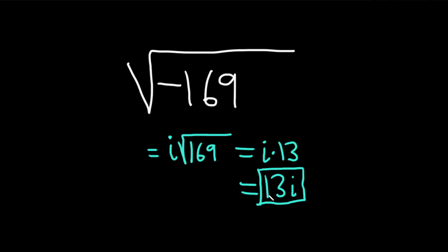But there is a faster way to do this. Eventually, you want to just look at this and say, hey, there is a negative sign under the square root. So that's going to give me an i. And the square root of 169 is 13. So it's going to be 13i.